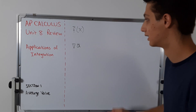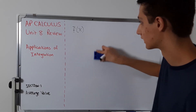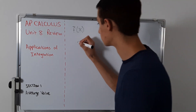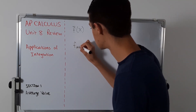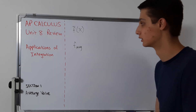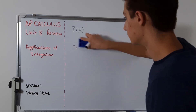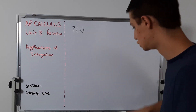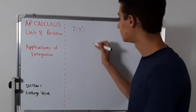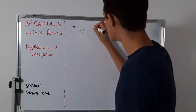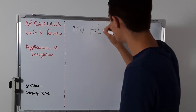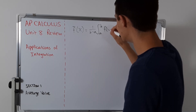Here in this class we don't really denote it like that, but you can. It might be more helpful to call it f-sub-average. The formula is going to be equal to one over b minus a, times the integral from a to b of f(x) dx.